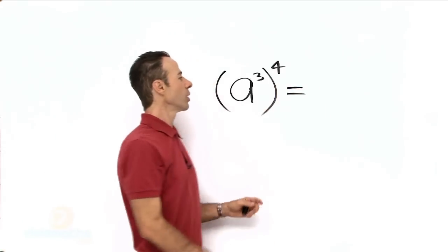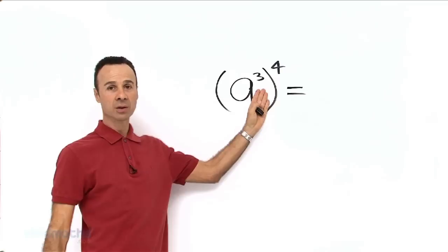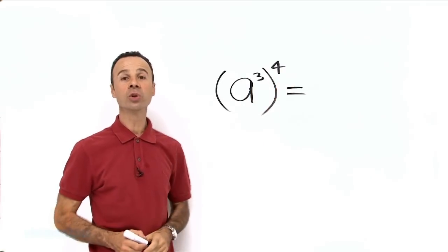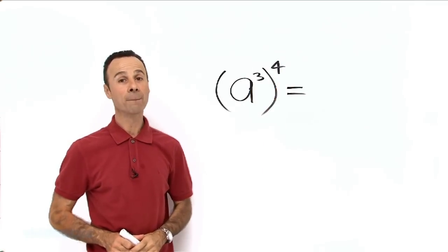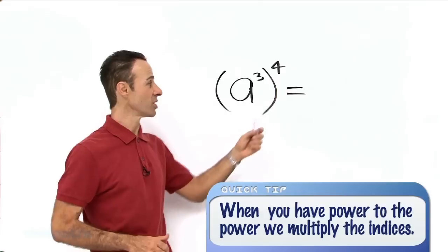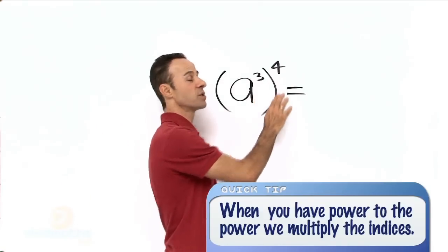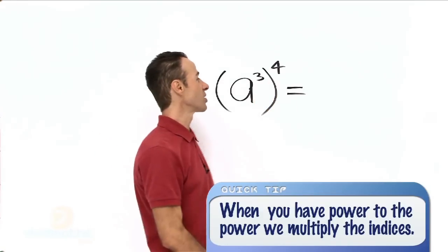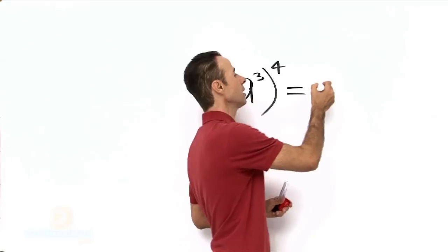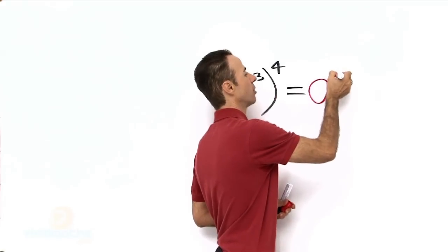So how does this work? When you have a power to the power, all you need to do is multiply the powers. So in this particular example, it's 3 times 4. What do you do? You multiply. So the answer yields A to the power of 12.